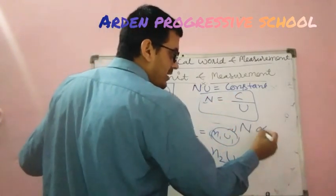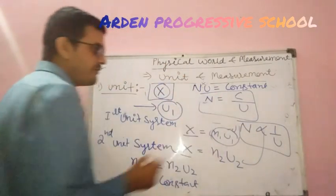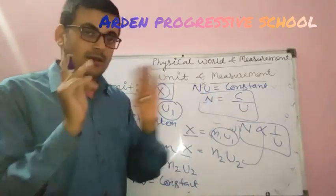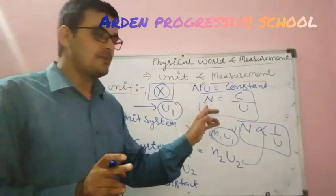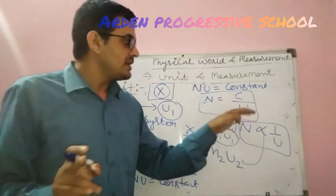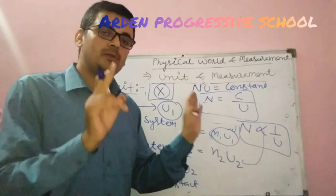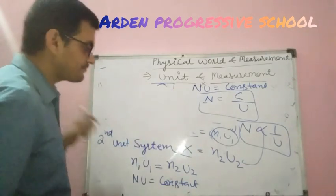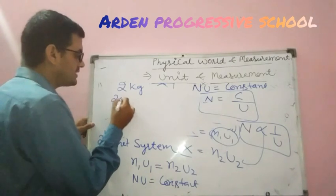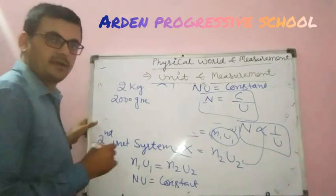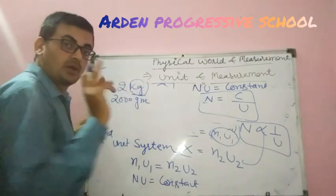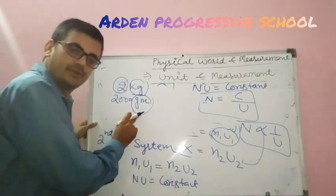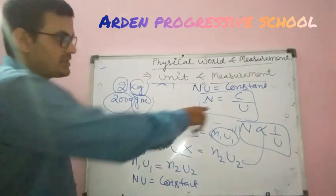Numerical value is inversely proportional to unit. Larger the value of the unit, lesser the value of the numerical value — and smaller the value of the unit, larger the value of the numerical value. For example: 2 kg sugar vs. 2000 gram sugar — kg is larger, so the numerical value is smaller (2), while gram is smaller, so the numerical value is larger (2000).